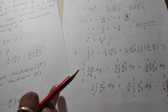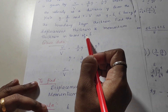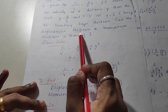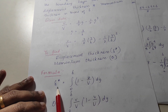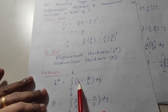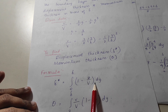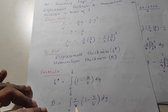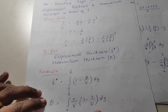The next problem involves finding displacement thickness and momentum thickness. A velocity profile is given and you have to find these two quantities. Write down the formulas: displacement thickness δ* equals the integral from 0 to δ of (1 minus u/U) dy. Momentum thickness θ equals the integral of (u/U) into (1 minus u/U) dy. These can also be written in terms of velocity V.